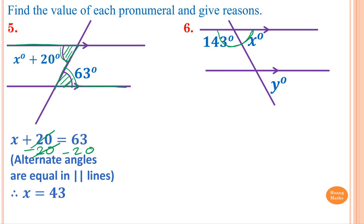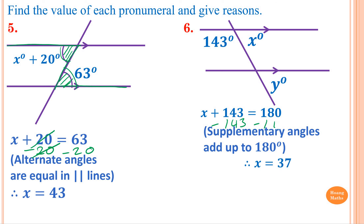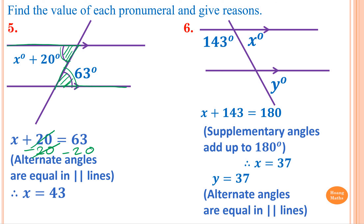Last question: first, to find X — this angle all the way from here to here are supplementary angles, so X plus 143 equals 180. The reason is supplementary angles add up to 180 degrees. Minus 143 from both sides — 180 minus 143 is 37 — therefore X equals 37. To find Y: Y and X form corresponding angles like the letter F, so Y equals X equals 37. The reason is corresponding angles are equal in parallel lines.